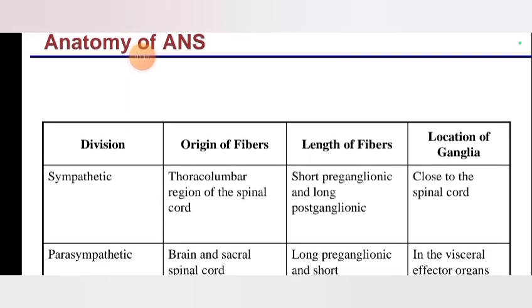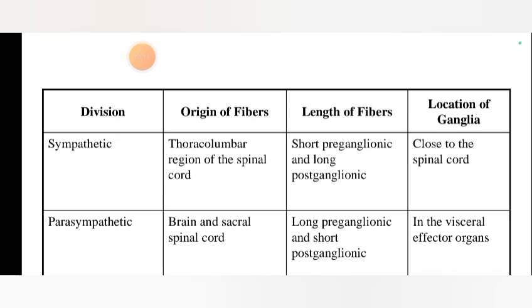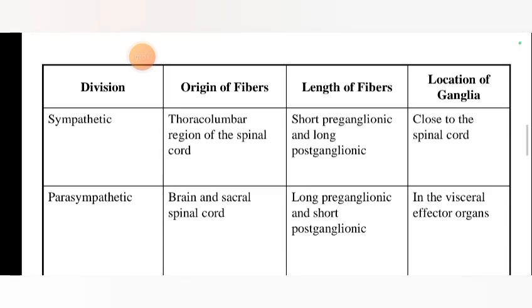Anatomy of the autonomic nervous system divisions — sympathetic and parasympathetic. Origin of fibers: thoracolumbar region of the spinal cord. Length of fibers: short pre-ganglionic and long post-ganglionic. Location of ganglia: close to the spinal cord.